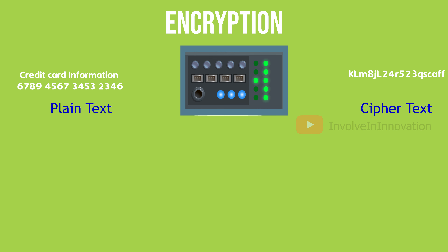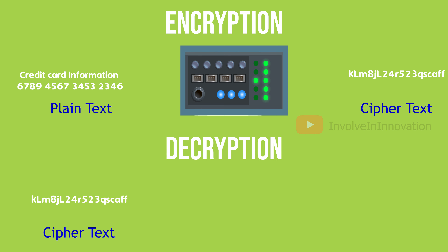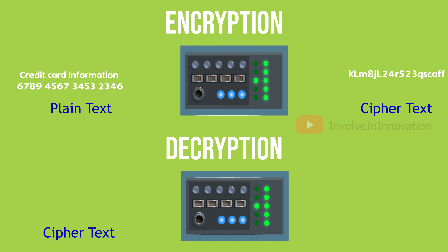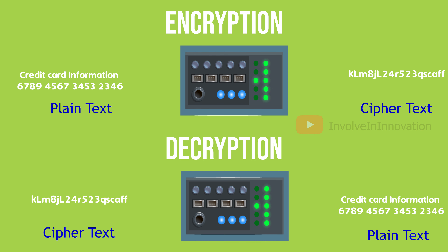Encrypted information can only be read if it is decrypted. Decryption is the other way around — it converts the cipher text or unreadable encrypted text back to plain text. Why do we need encryption and decryption in the first place? How does it ensure security in data transfer?